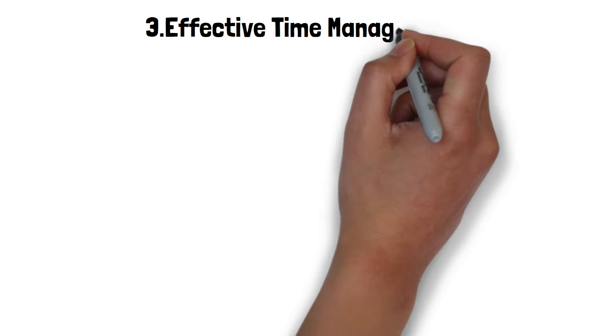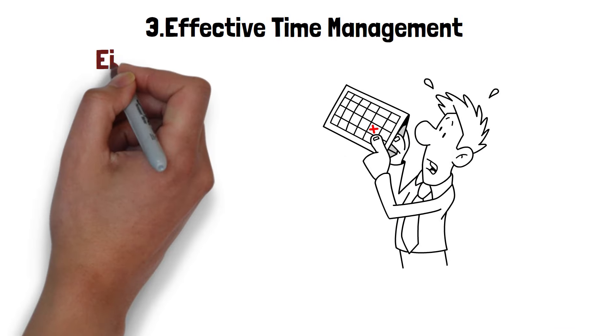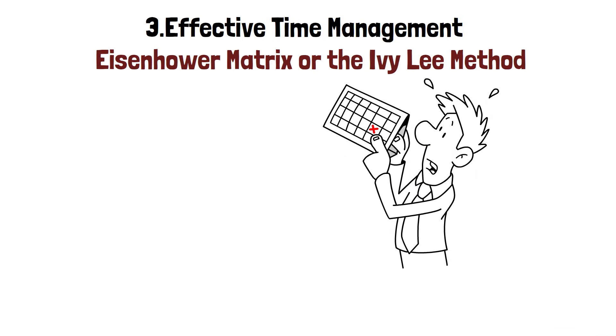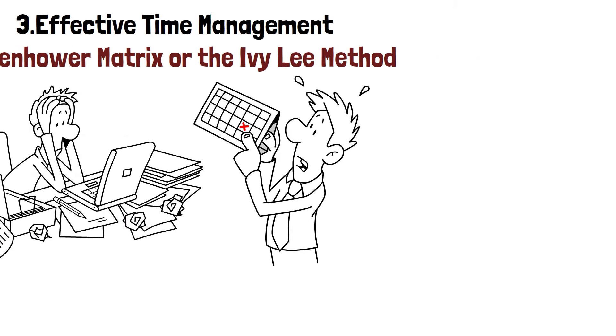Number 3. Effective Time Management. Prioritize tasks based on their importance and deadlines, using techniques like the Eisenhower Matrix or the Ivy Lee Method to make the most of your time. Set boundaries to protect your time and avoid over committing.